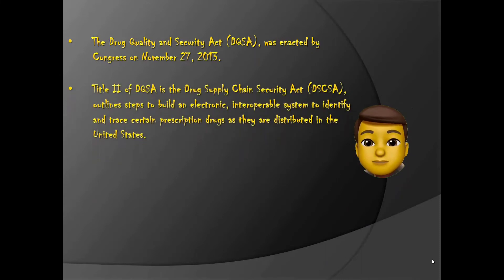Title II of the DQSA is the Drug Supply Chain Security Act, which outlines steps to build an interoperable system to identify and trace certain prescription drugs as they are distributed in the United States.